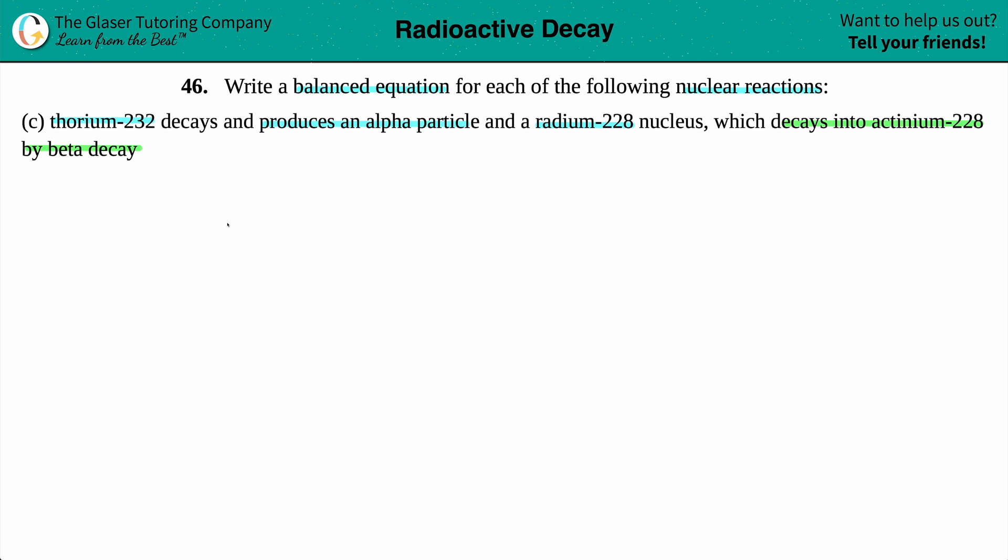So let's start with the first equation first. We'll say equation number one. So in this equation, we have to take our thorium-232. Now we're dealing with nuclear reactions, which means that we have to have those three separate boxes for our nuclei notation. And in this case, we're going to take our thorium. So it's good to just have everything written out. So we got thorium-232.